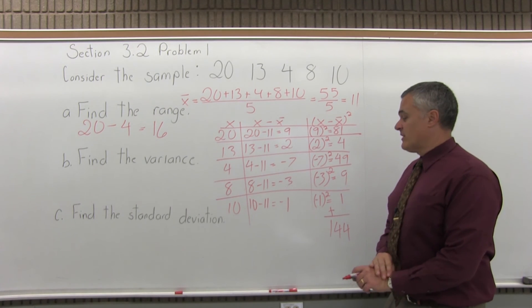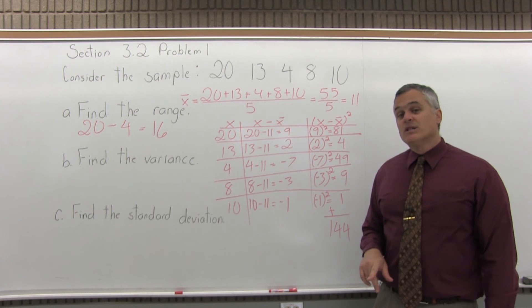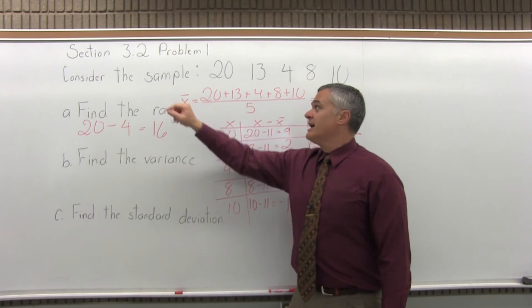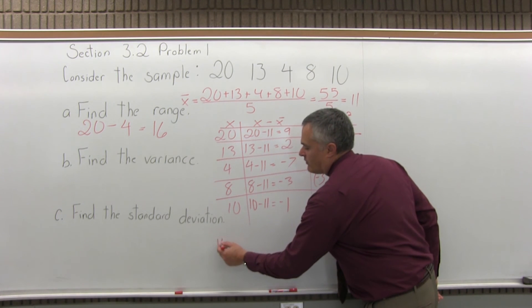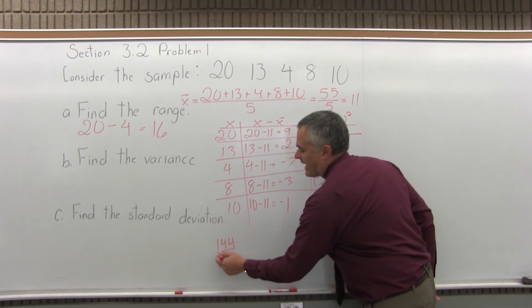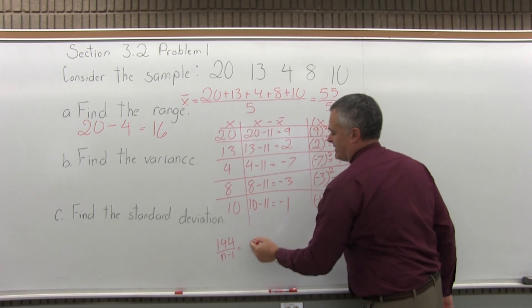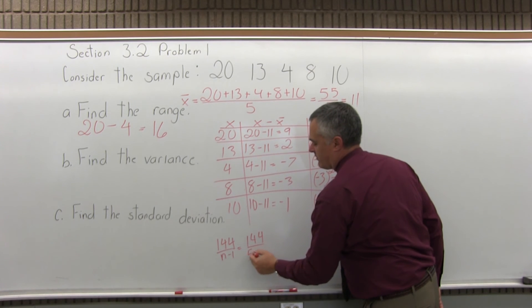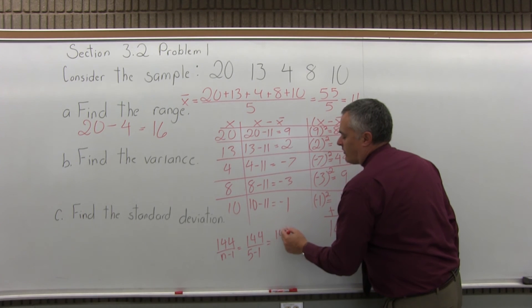Step 4, the final step for variance, is take the result from step 3. Divide by n minus 1 for a sample. And this is a sample. It says so in the question. And n is how many data values. So I will have 144 over n minus 1. n is 5 because I have 5 data values. So 144 over n minus 1 becomes 144 over 5 minus 1, which is 144 over 4.